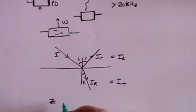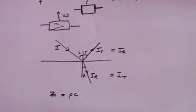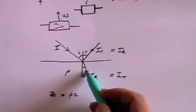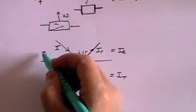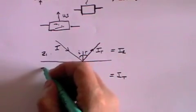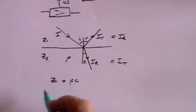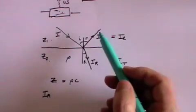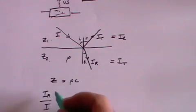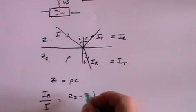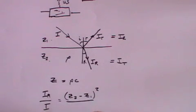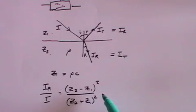There is a concept called acoustic impedance, which we give the letter Z, which is rho times C. Rho is the density of the medium and C is the speed of sound through that medium. If you're going from one medium to another, one medium that has Z1 as its acoustic impedance and the other has Z2 as its acoustic impedance, then the ratio of the intensity of the reflected beam to the intensity of the original beam is given by (Z2 minus Z1) squared divided by (Z2 plus Z1) squared, and that ratio is known as the intensity reflection coefficient.